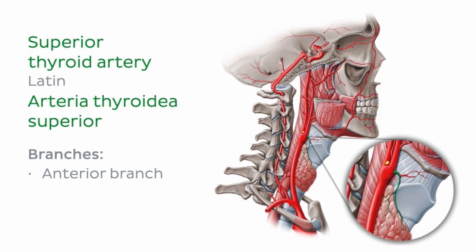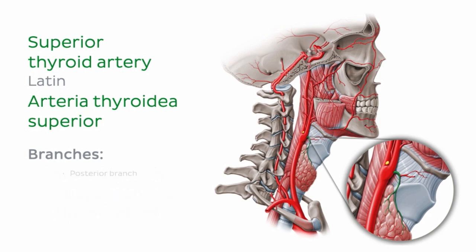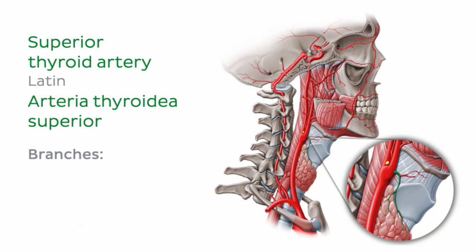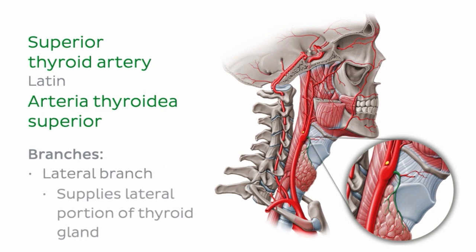The anterior branch supplies the anterior portion of the gland and travels towards the isthmus. The posterior branch supplies the superior and posterior portion of the thyroid gland. Finally, the lateral branch supplies the lateral portion of the thyroid gland.